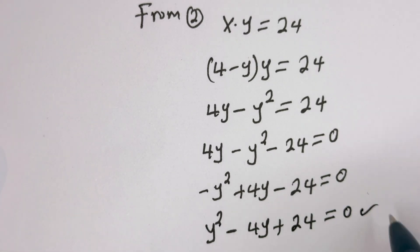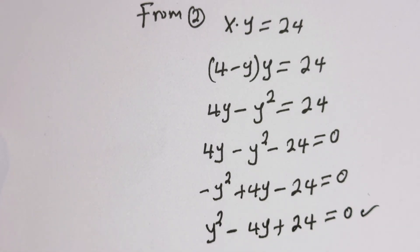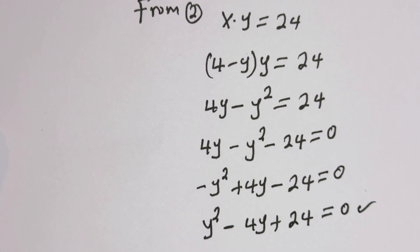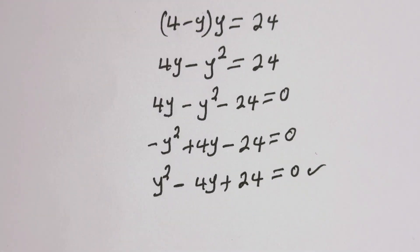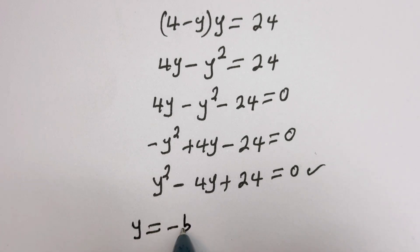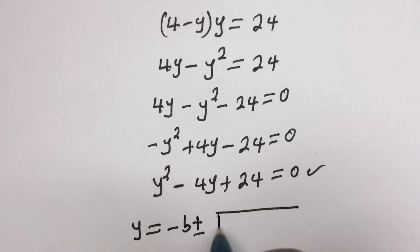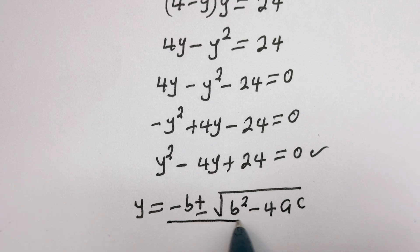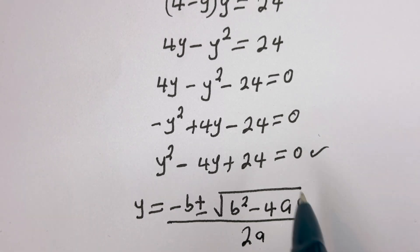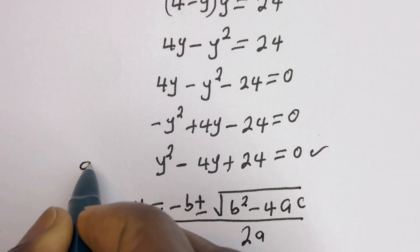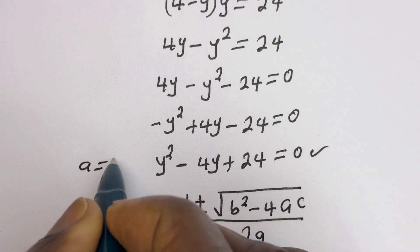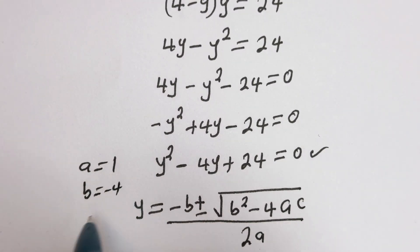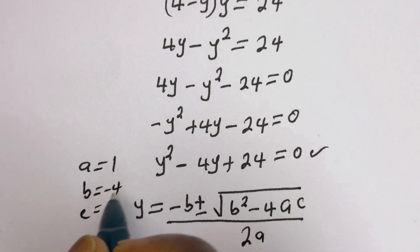And this is a quadratic equation. Let's solve this using the quadratic general formula. Our quadratic general formula gives us y is equal to minus b plus or minus square root of b squared minus 4ac, divided by 2a. From this equation, a is equal to 1, b is equal to minus 4, and c is equal to 24.